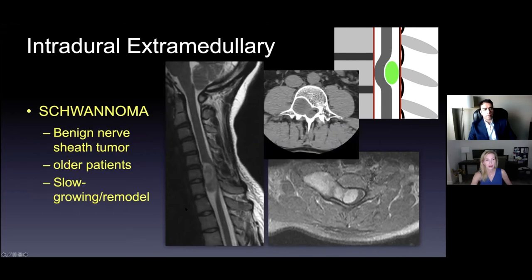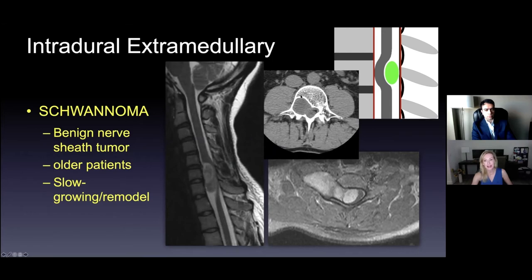I would add neurofibroma and MPNST to that differential diagnosis — nerve sheath tumors. The malignant peripheral nerve sheath tumors are a whole other category. Typically these are older patients and we know it's slow growing. This CT scan, axial view, shows the spinal canal in the middle. You can see a very sclerotic line around this area right above the foramen. Years and years this tumor has been growing and remodeling rather than destroying the bone — so this is a benign tumor. This is how you know it's going to be a schwannoma or a neurofibroma.